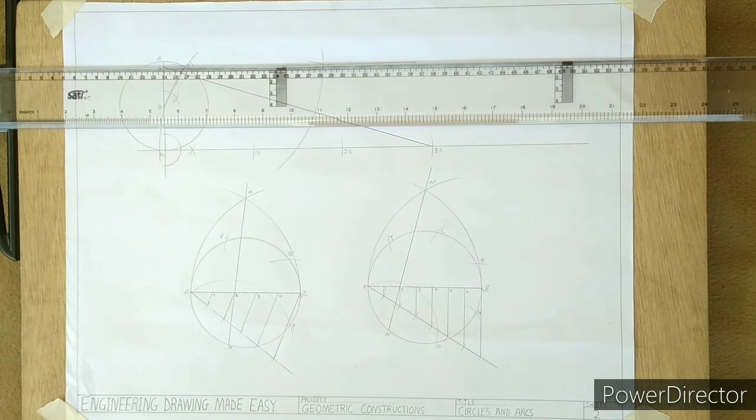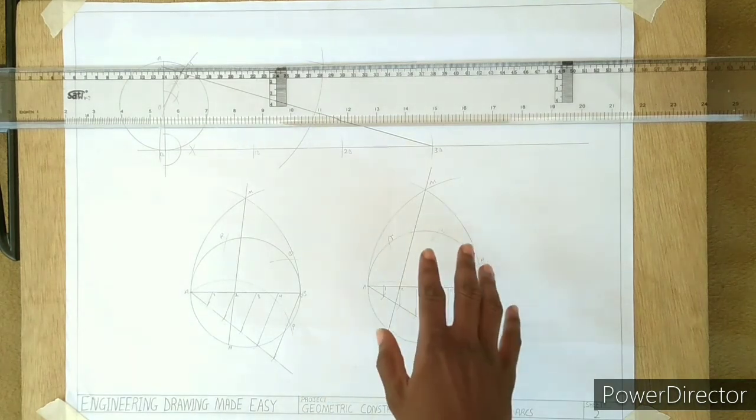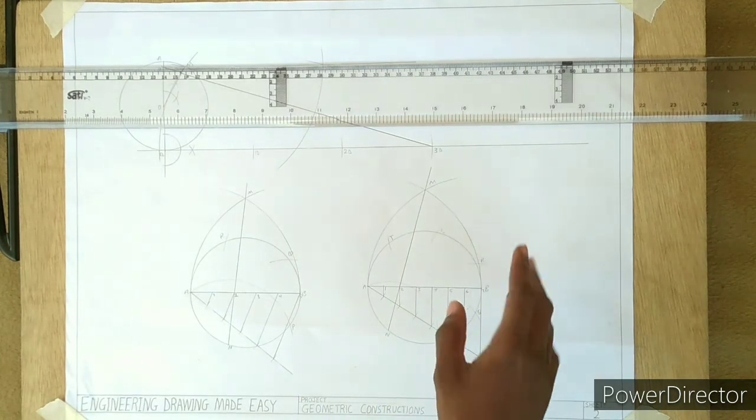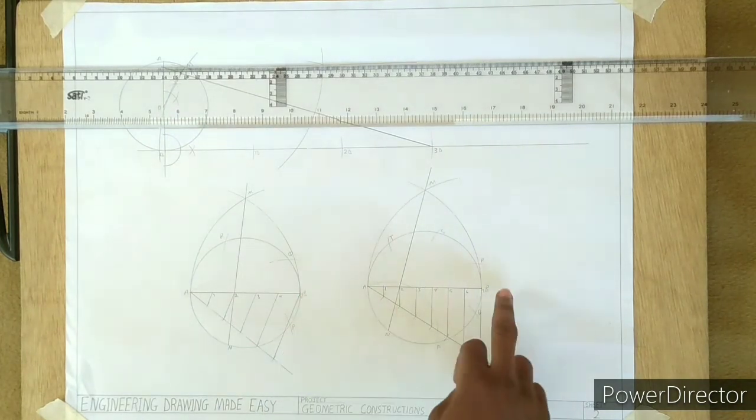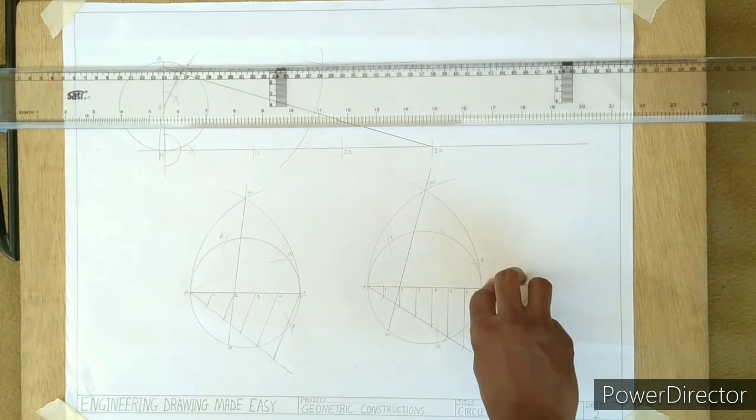And that is how to divide the circumference of a circle into a given number of equal parts. Please note, B is not part of the equal dividing point, so you can erase it.